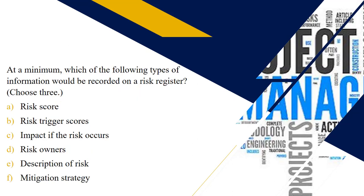At a minimum, which of the following types of information would be recorded on the risk register? Select three from this list. Standard information that exists on a risk register might include an identification number, a description, the probability and impact, a risk score, and the owner — as they all relate to risks.